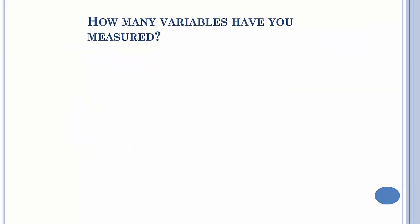So how many variables have you measured? Well, univariate means you've only measured one thing on each experimental unit.